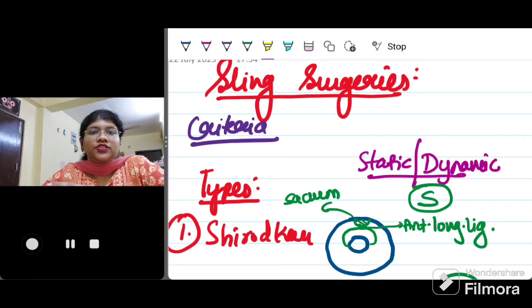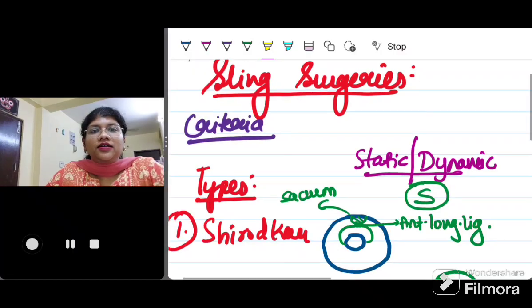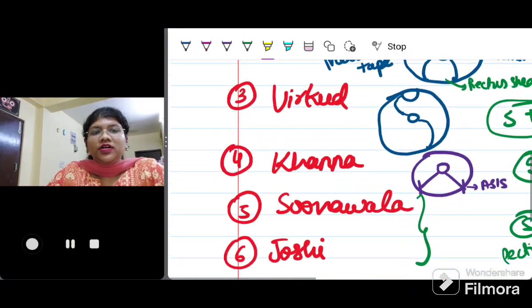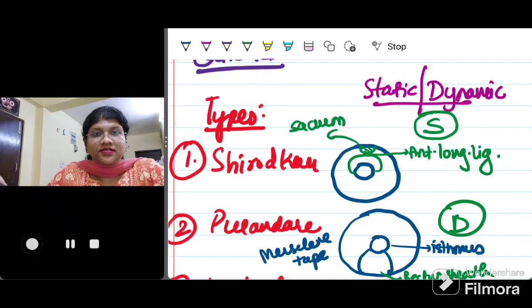In a nutshell, remember any young female with prolapse has to be offered sling surgeries. To understand sling surgery, it is important to know what are the types, the names, and under what category we are dividing them. We will be basically learning about six sling surgeries. Some are of only theoretical interest now and few of them are practically done even today.